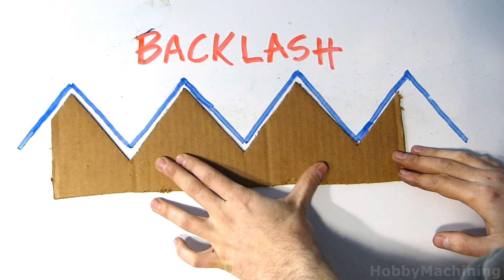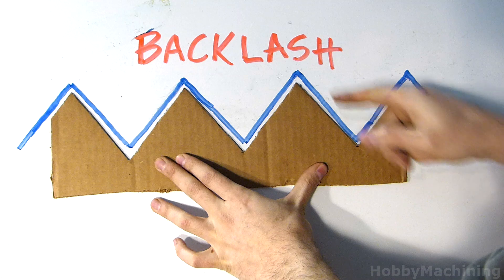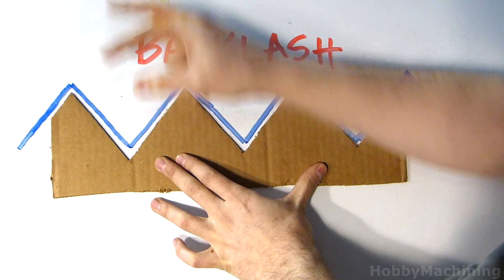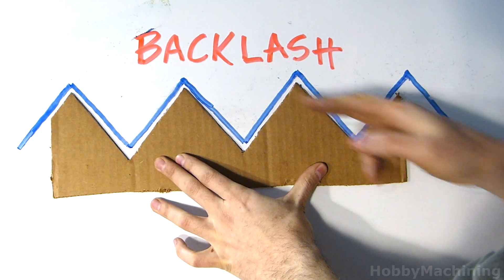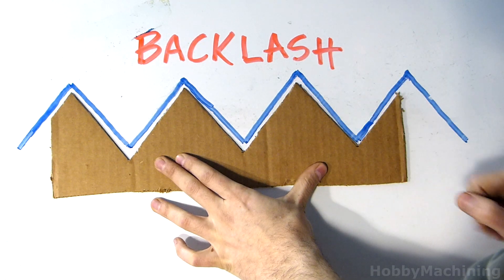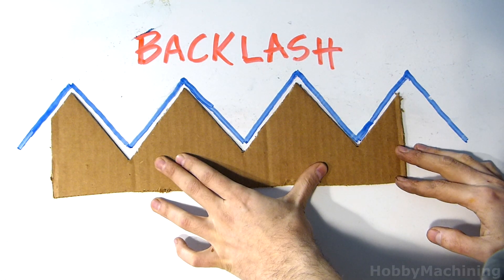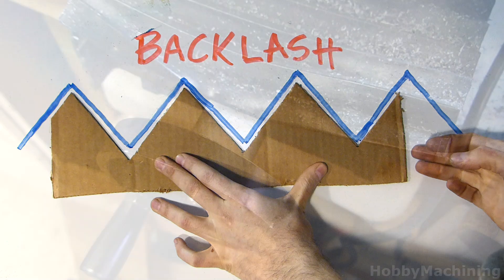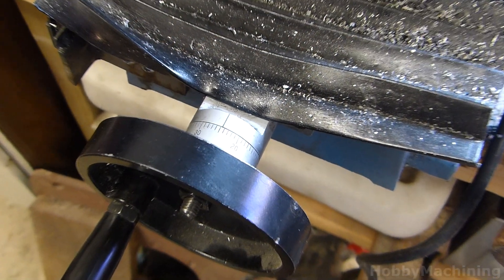Now some backlash is important because binding will occur if all of this stuff was perfect and tight, plus you need room for lubricant to be in between the two mechanical interfaces. Let's take a look at other potential causes of backlash.